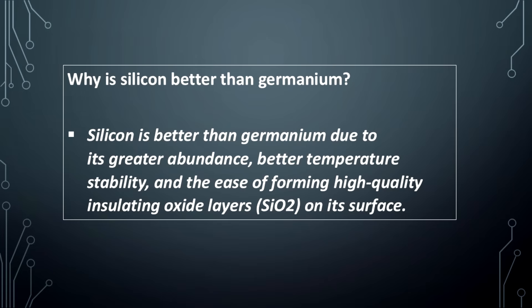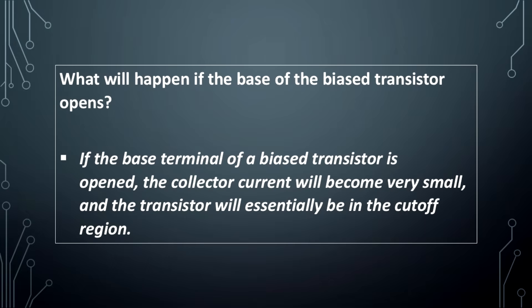Why is silicon better than germanium? Silicon is better than germanium due to its greater abundance, better temperature stability, and the ease of forming high quality insulating oxide layers on its surface.